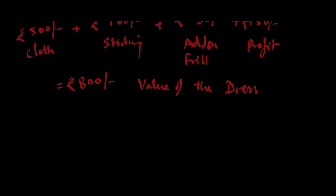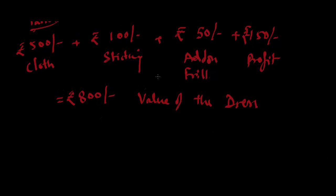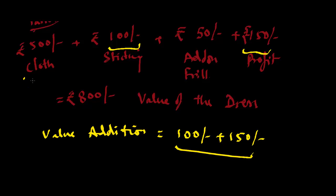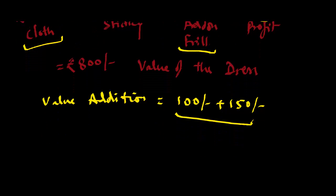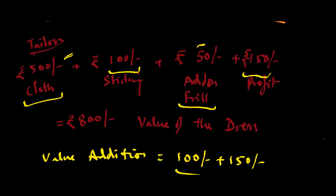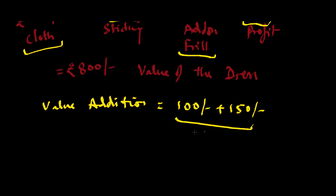But if we are to count the value of addition, it is only the 150 rupees profit and 100 rupees stitching charge. The value addition here is only the 100 of stitching and 150 as profit — nothing else — because the cloth was already in the market, which the tailor purchased. And the add-ons like frill, buttons, or chain sets were also already available and counted. So we will not consider those amounts again — the 500 and 50 — otherwise it would be considered double counting.